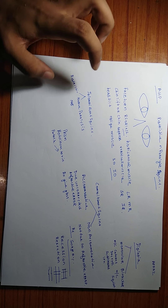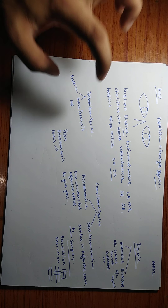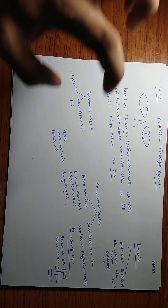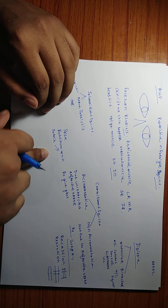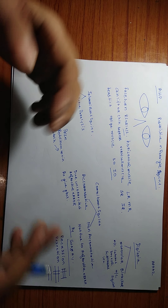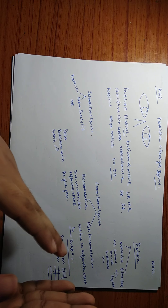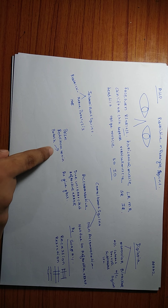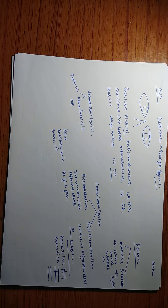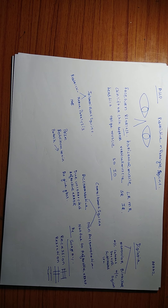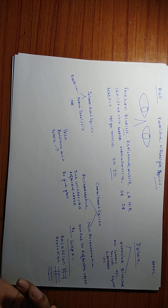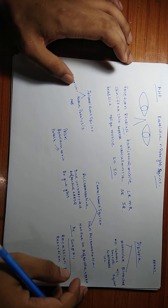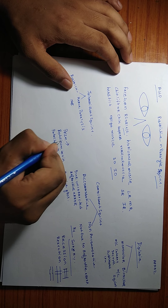For incomitant squint, the main treatment is to treat the underlying cause, which is mostly diabetes, trauma, or hypertension. It requires around three to six months for the nerve to recover. During this time, diplopia will be very challenging, so we treat the underlying cause and simultaneously give management for diplopia — patching or prism.